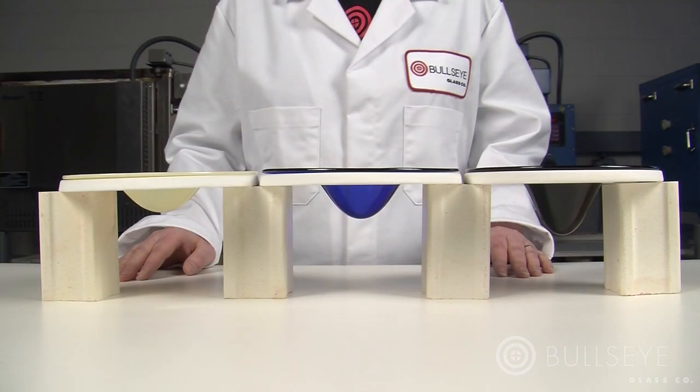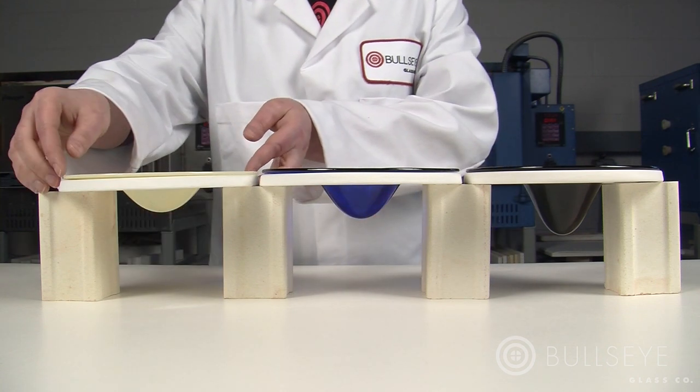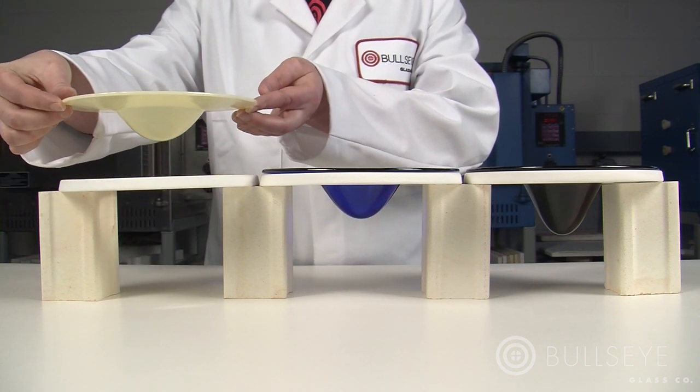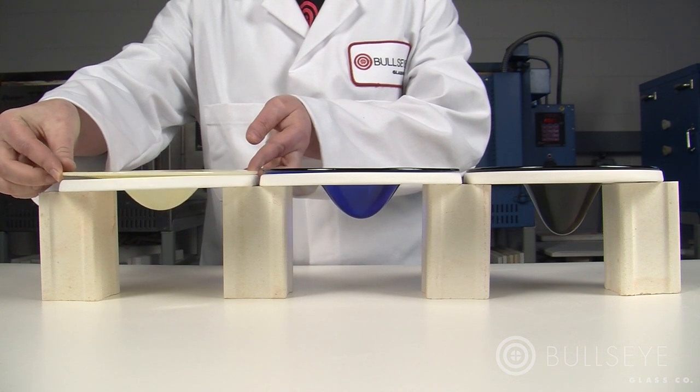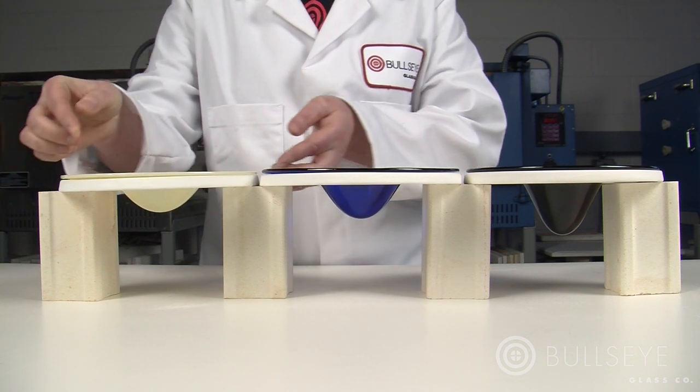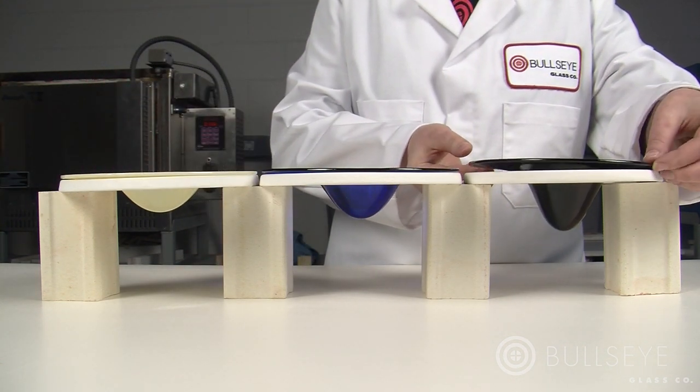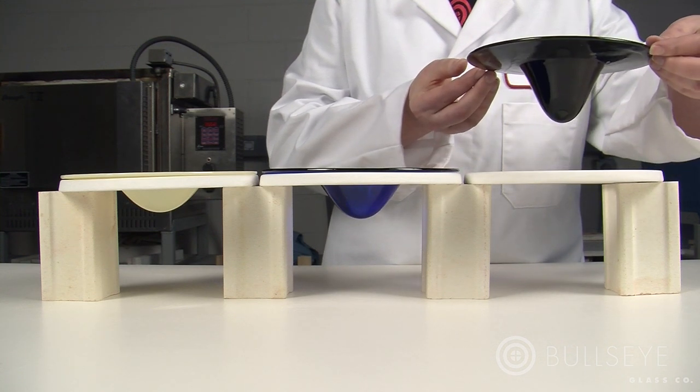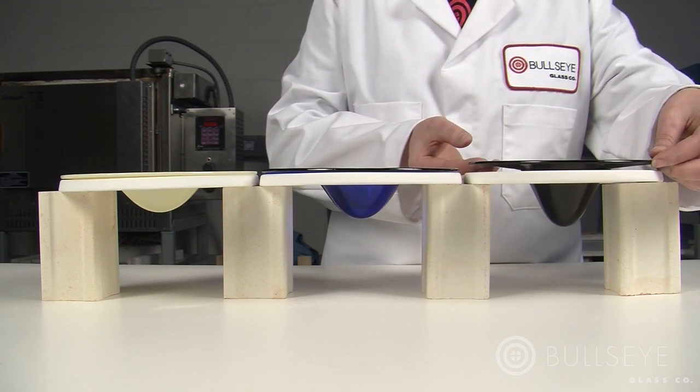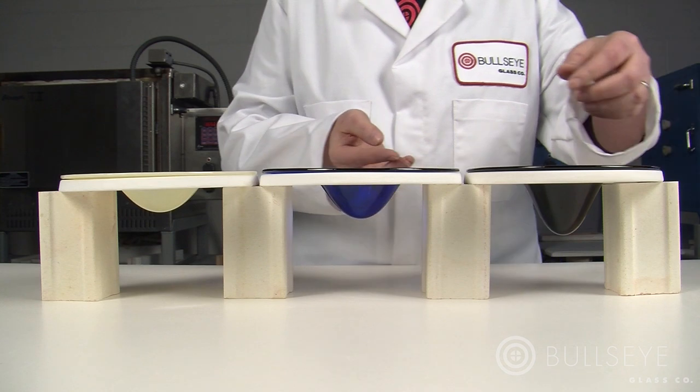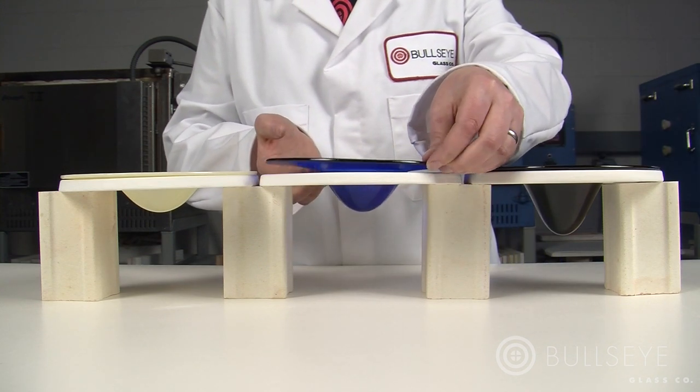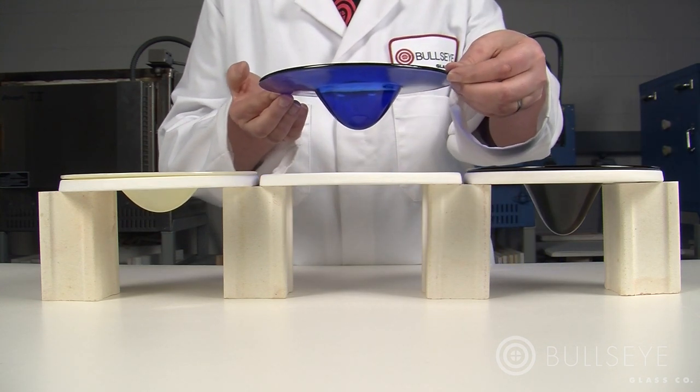Also, consider the viscosities of different glasses. These samples were slumped in dropout molds using the same firing schedule. The French vanilla sample has a higher viscosity in the slumping range than the black sample, so the black sample slumped significantly more. The deep royal blue sample falls somewhere in between.